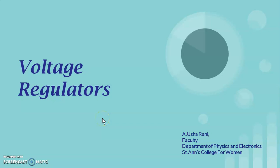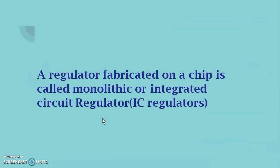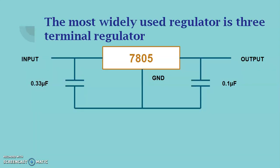In this video we will see about voltage regulators. A voltage regulator which is fabricated on a chip is called an integrated circuit regulator, or monolithic regulator. In short form it is called an IC regulator. The most widely used regulator is the three terminal voltage regulator.